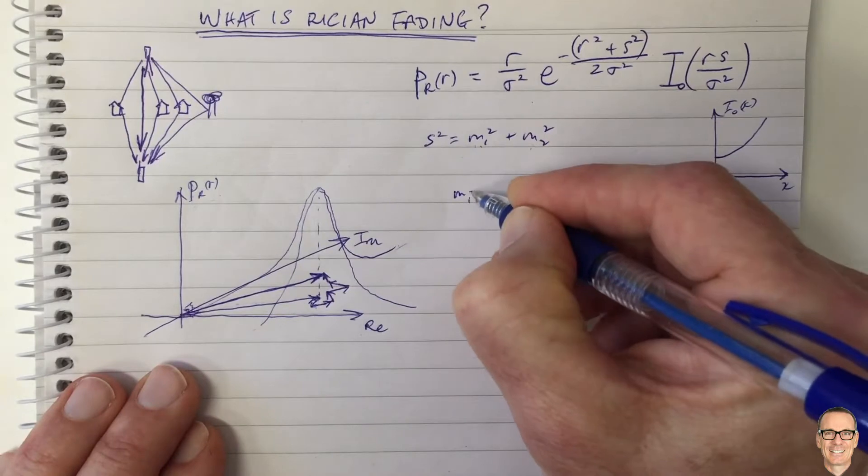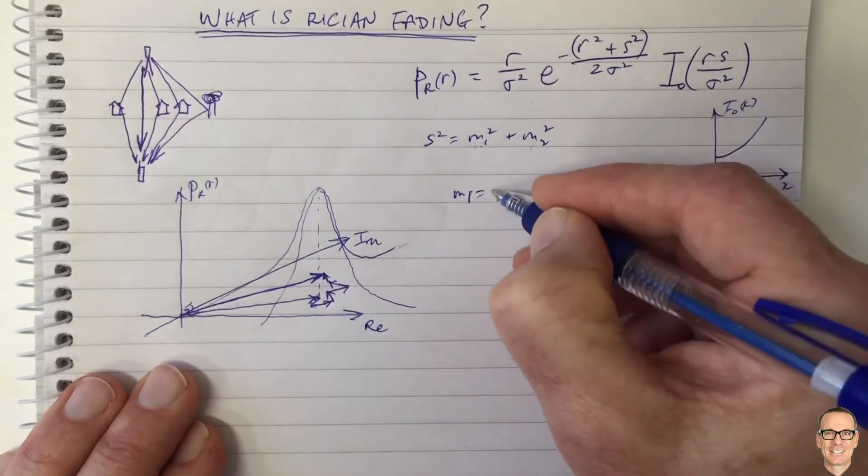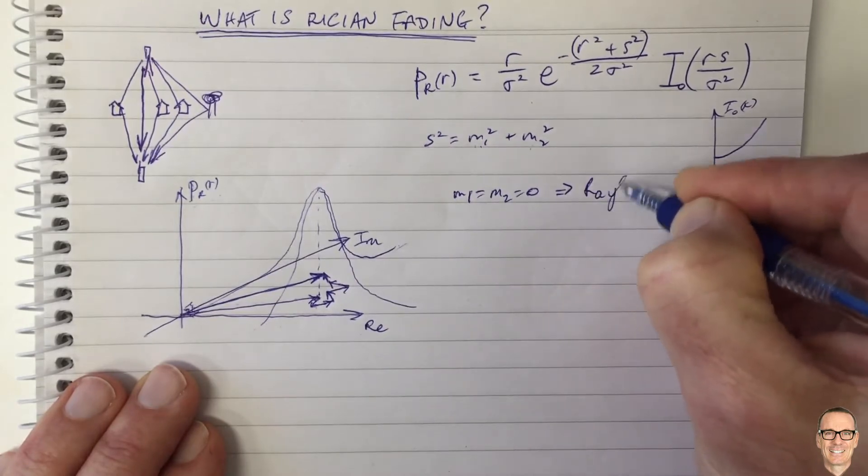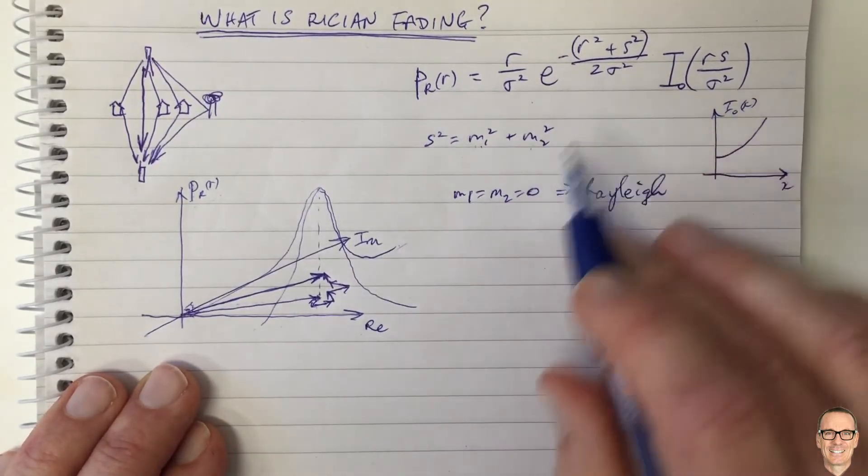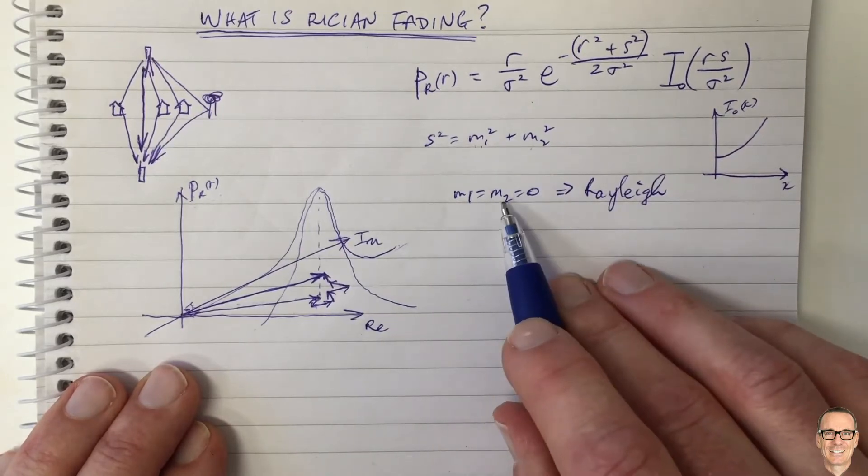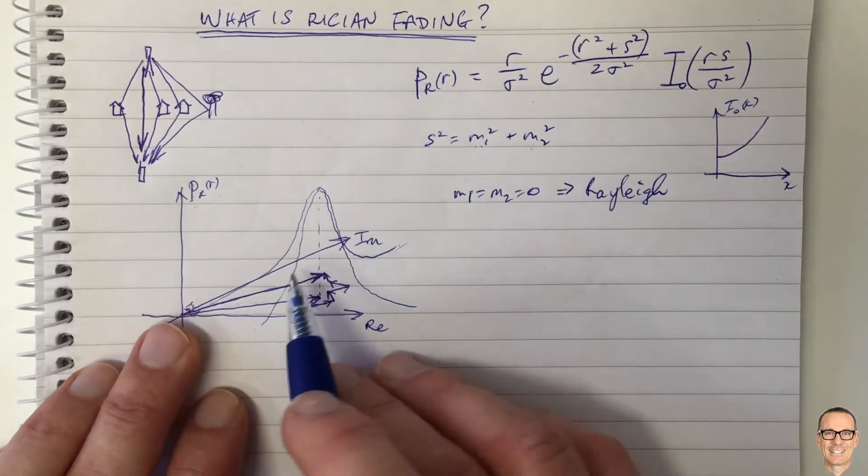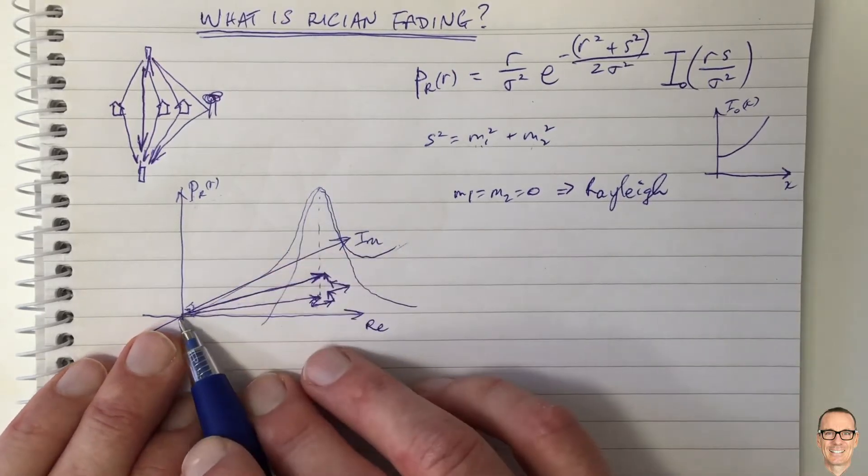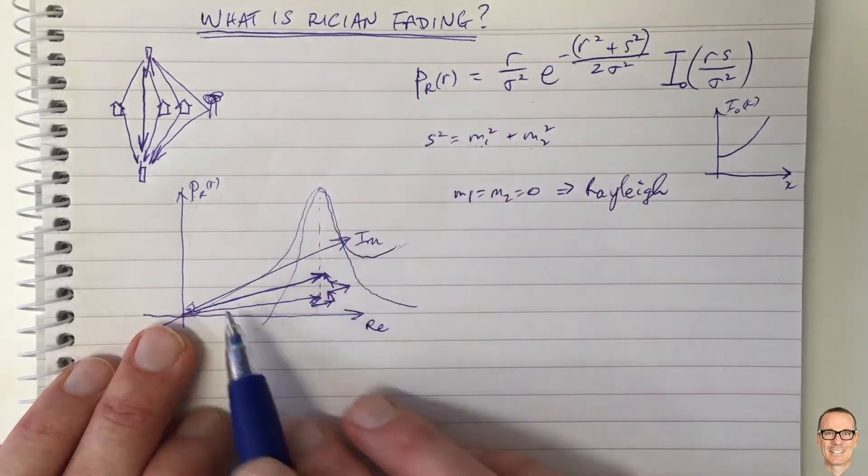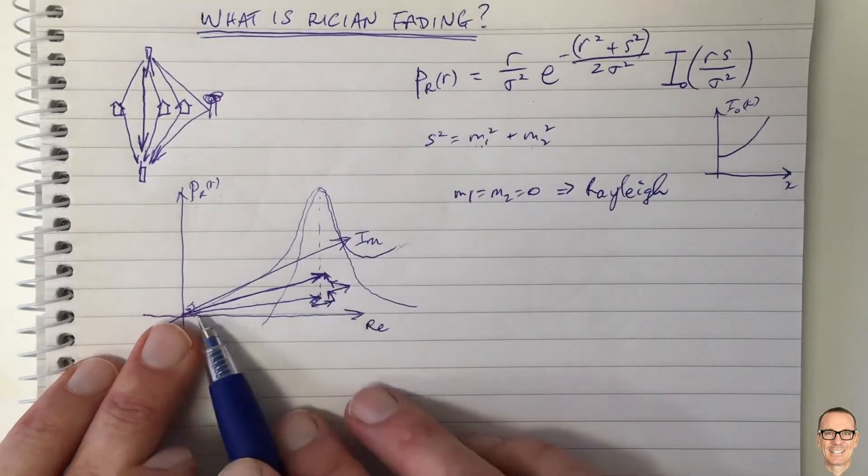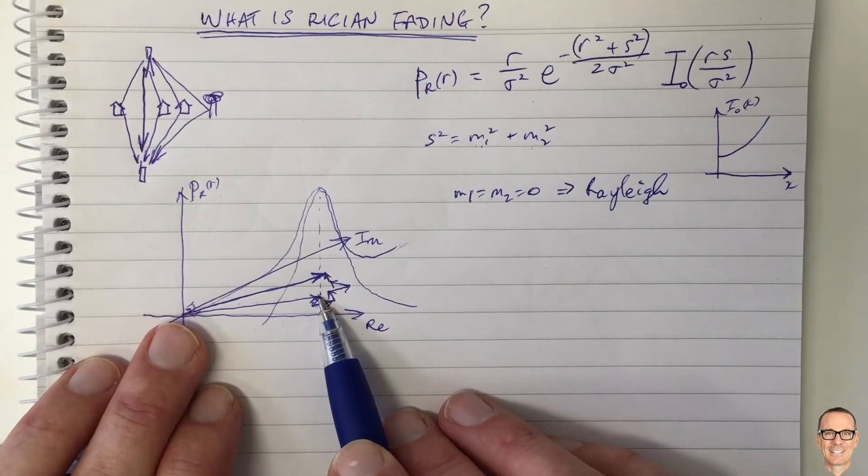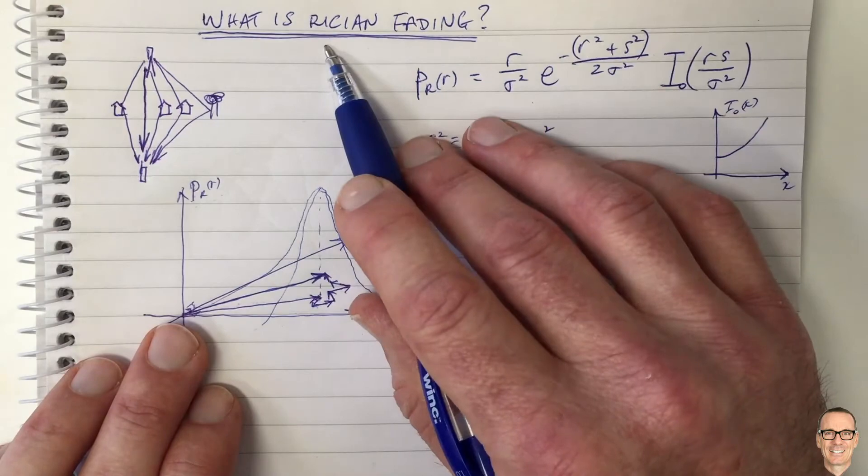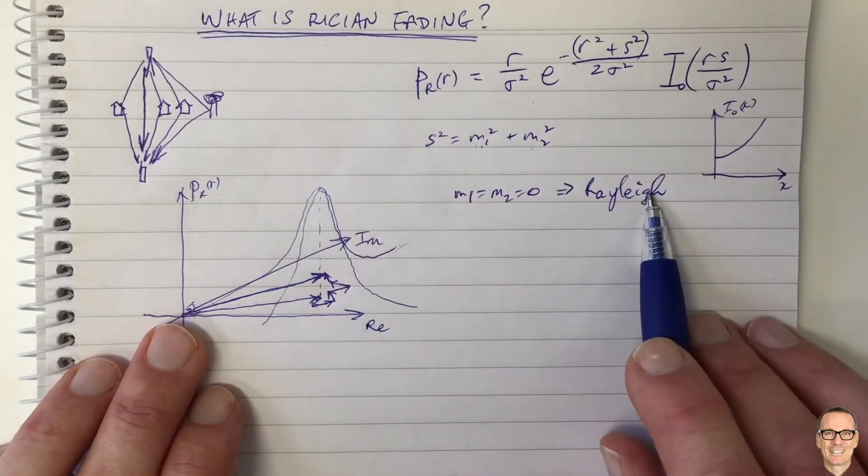if m1 equals m2 equals 0, then we have exactly the Rayleigh case. So Rician includes the Rayleigh case when m1 and m2 equal 0. And if you look back at the video for the Rayleigh case, you'll see this Gaussian exactly centered over the origin. The only difference here is that Rician is shifted now to this place, which is over the location of the dominant path.